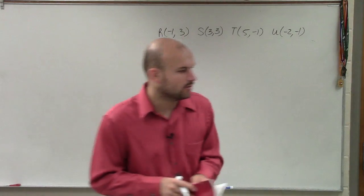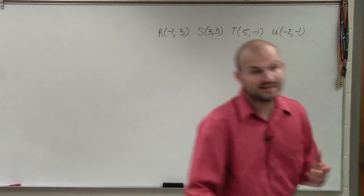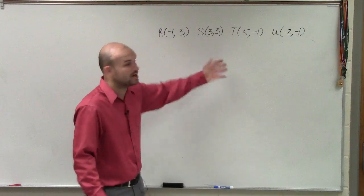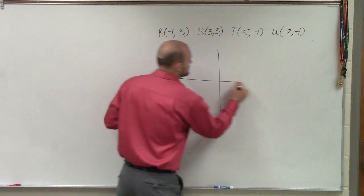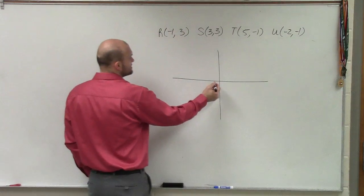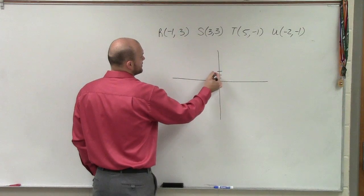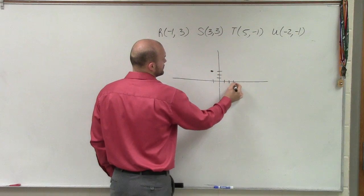Okay. So what we need to do for this case is we need to work on finding the distance between each one. Because we have the quadrilateral, right? So we have these points. A lot of times, what I'd like to do is plot these points so I can kind of see what they look like. R is negative 1, 3. S is 3, 3.